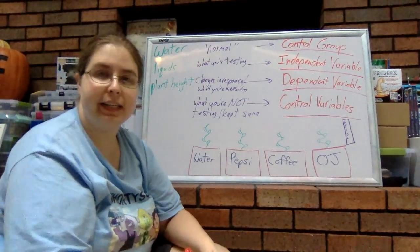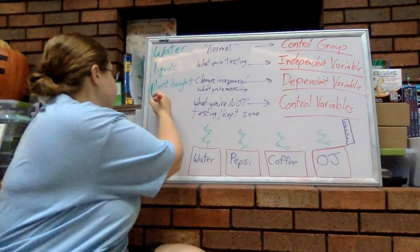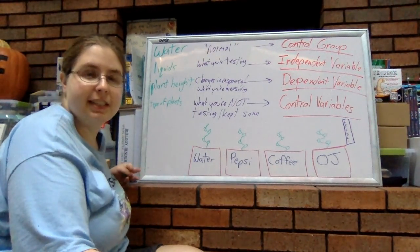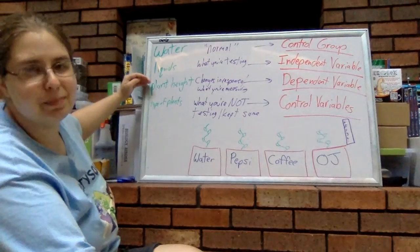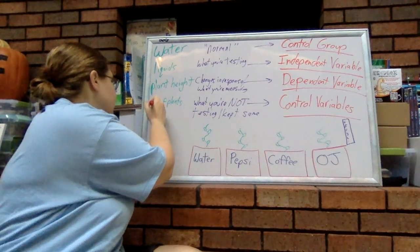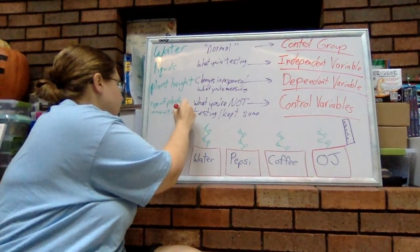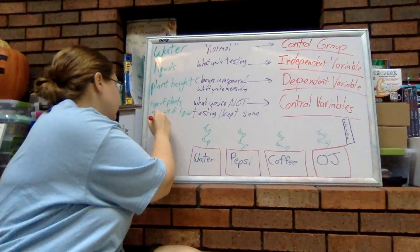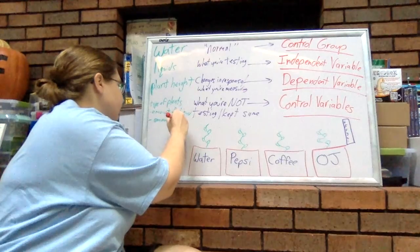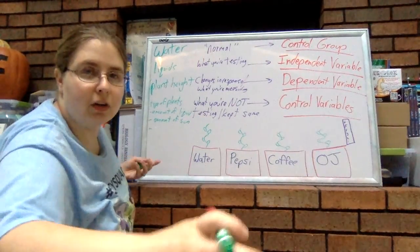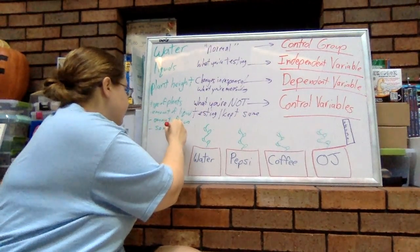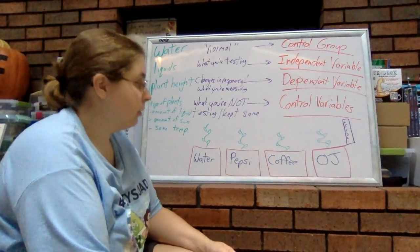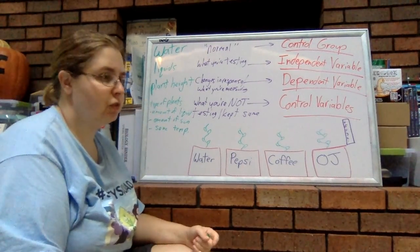So what are some things we want to keep the same? We want to use the same type of plants for each one. We want to make sure they're all given the same amount of liquid — we're changing the type of liquid, so we don't want to change the amount. We want to make sure they all get the same amount of sunlight, the same temperature, and the same type of soil — meaning the pH and mineral levels in the soil are all going to be the same.